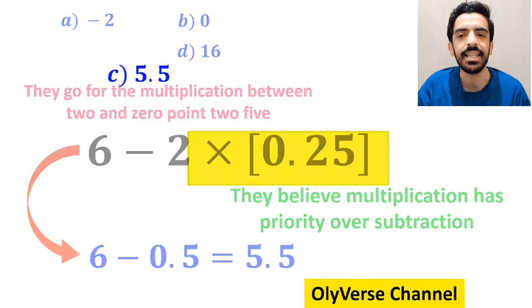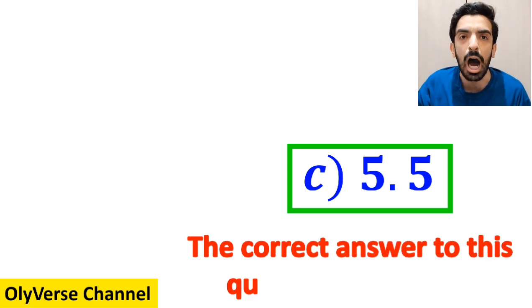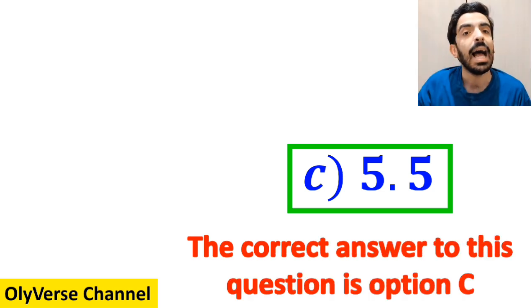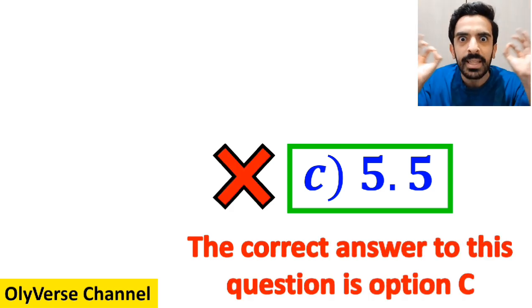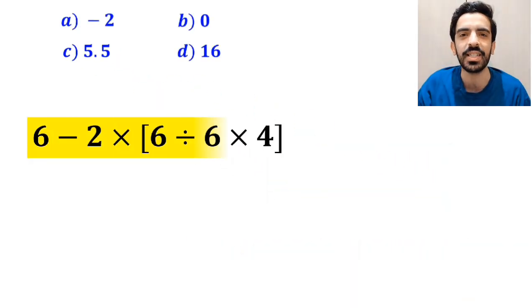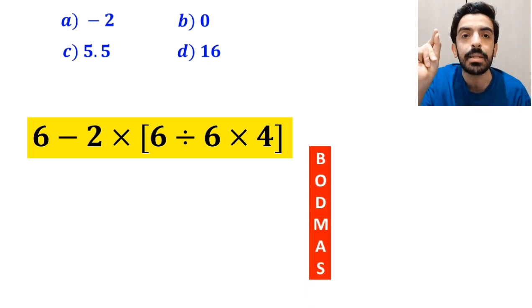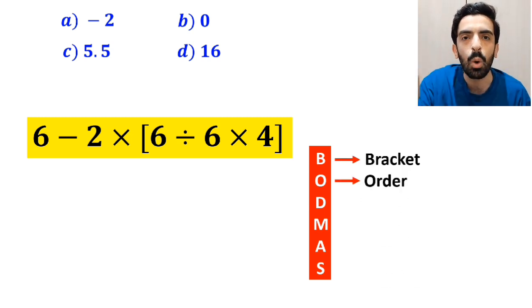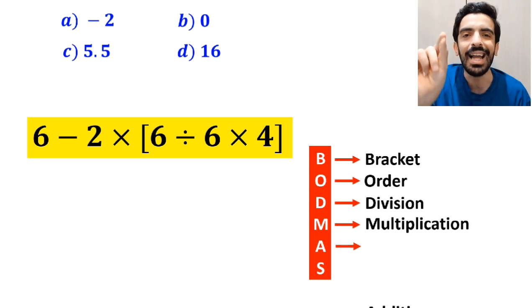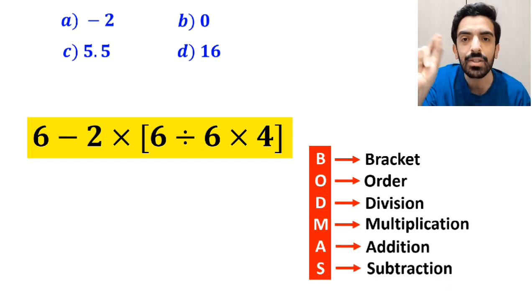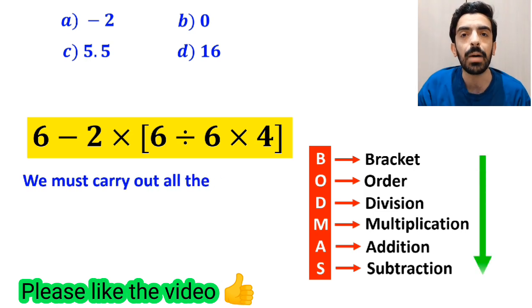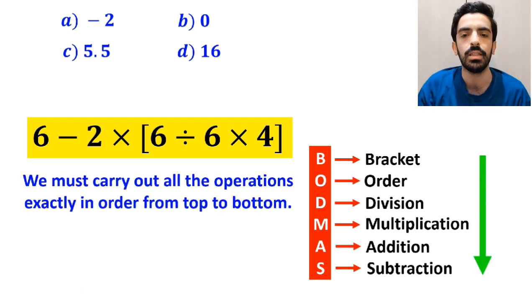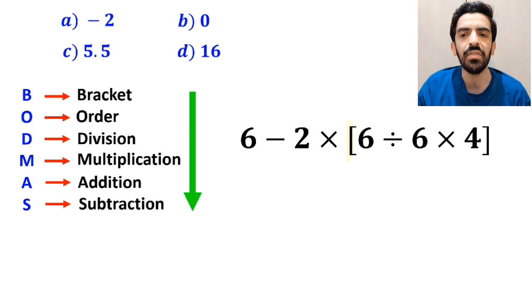They then multiply 2 and 0.25 to get 6 minus 0.5, which gives the answer 5.5, and say the correct answer is option C. However, this answer is absolutely wrong. To solve this expression properly, we need to strictly follow the BODMAS math rule step by step: B stands for brackets, O for order, D for division, M for multiplication, A for addition, and S for subtraction.